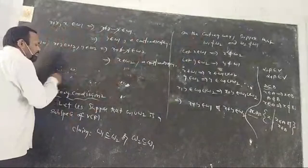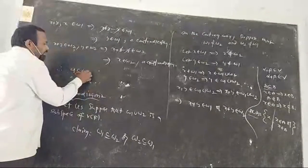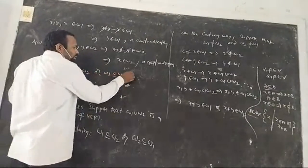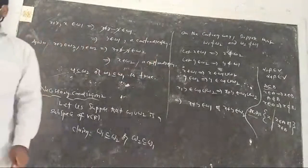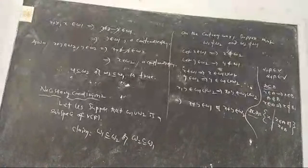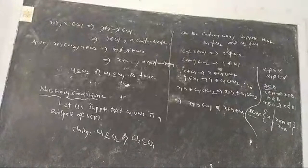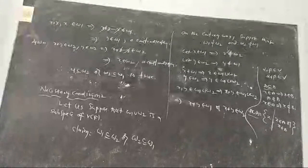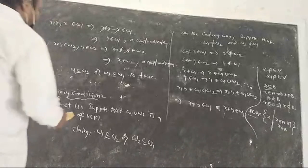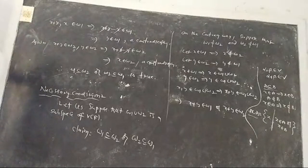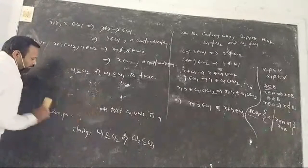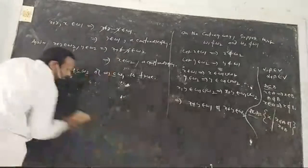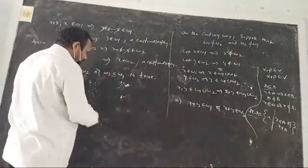Therefore, our assumption was wrong. So W1 is a subset of W2 or W2 is a subset of W1. This completes the first part — the necessary condition.